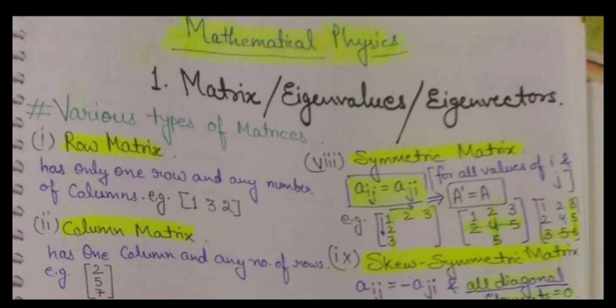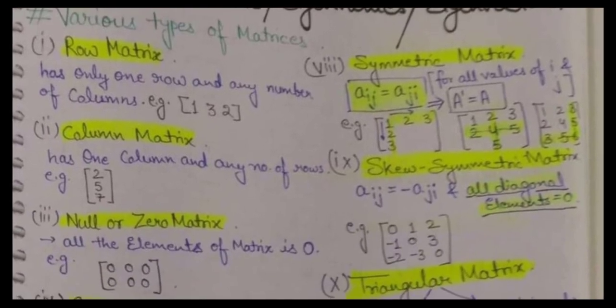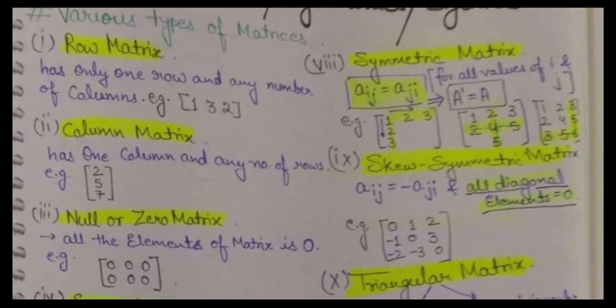So first of all we are going to talk about the different types of matrices. These are the basic points but they should be clear to us. The first type is row matrix — a matrix which will only have one row and the number of columns can be any number. For example, we have elements 1, 3, and 2 in one row with 3 columns. This type of matrix is known as row matrix.